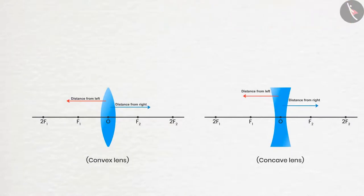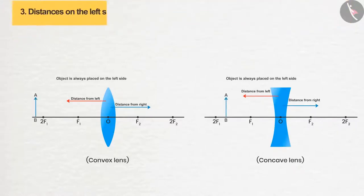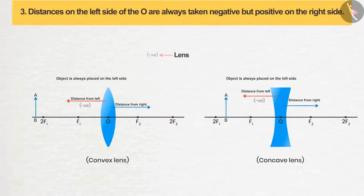Number two: the object is always placed on the left side of the O, as it was used to be in the mirror formula too. Number three: distances on the left side of the O are always taken negative but positive on the right side.